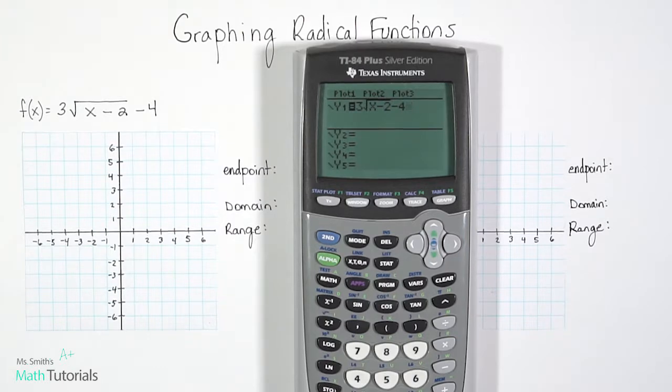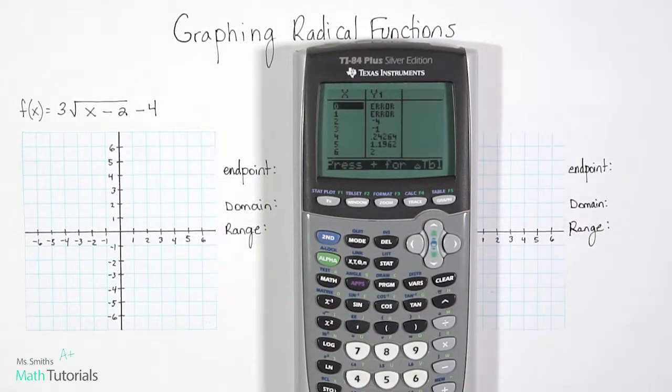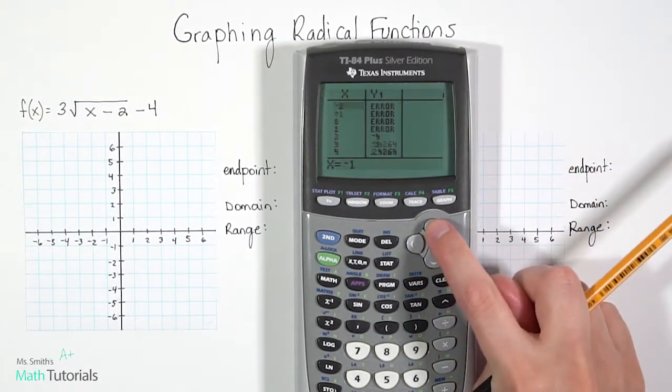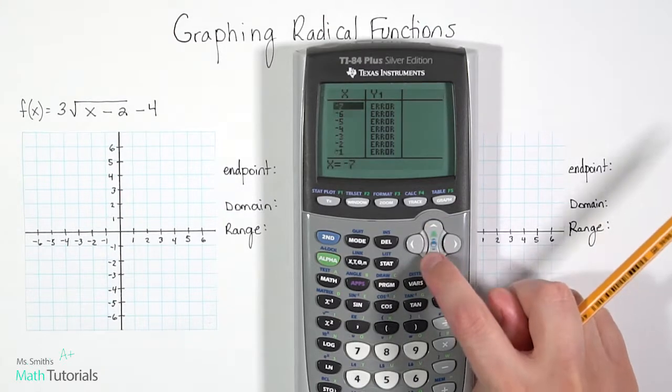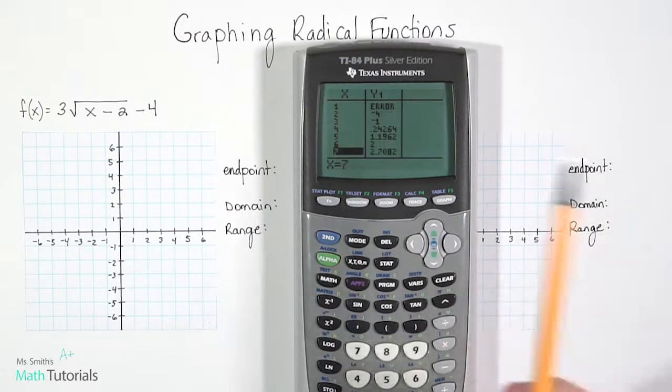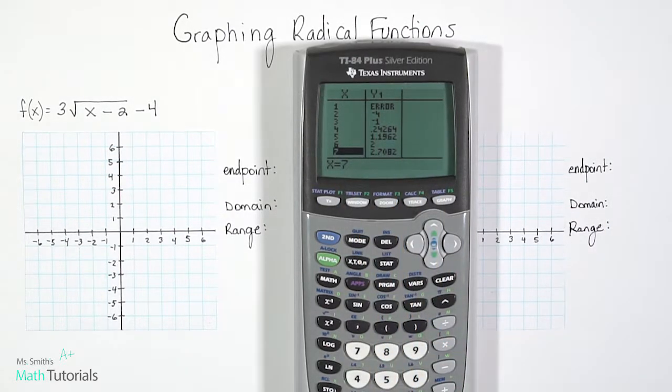Now we want to look at our table of values because that's what's going to show us where our endpoint is and where our solid whole number points are. So we're going to hit second graph. This takes us to our table. Now the first thing you'll probably notice are these errors. And if you keep scrolling up, you're going to keep getting errors. So we want to find where's that line, right? So where's the final error, and then that next point, because that next point is our endpoint.